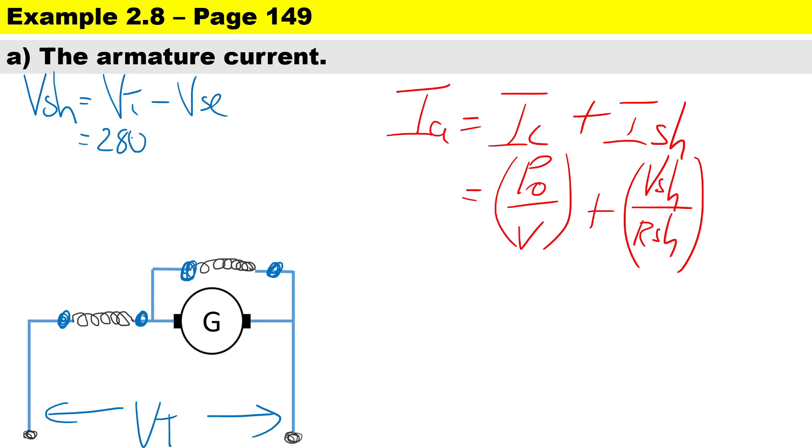I think it's important to point out our current. The current through the series winding is the same as the current going to the supply, so IL equals Ise. One way to calculate that is to take your output power and divide it by your voltage.